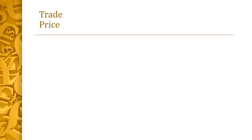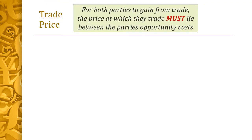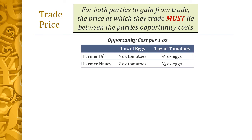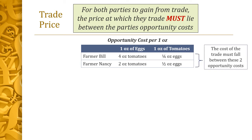When we talk about trade, we have to mention price. We know comparative advantage is the deciding factor, and it's based on opportunity costs. For a trade to happen, the price must fall between the two parties' opportunity costs. Here are the opportunity costs for Farmer Bill and Farmer Nancy. For both parties to want to trade, the cost must fall between these two values.